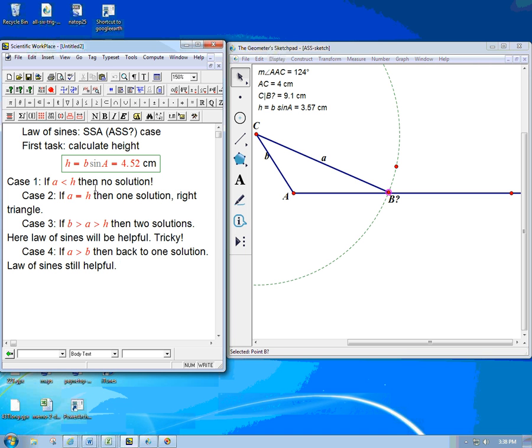So, really, what we're talking about is the first task, if A is acute. The given angle. It doesn't matter what the letter is. That's the interesting case. Calculate the height. Look at all these cases. If A is obtuse, it's a simpler situation. Case one is where A is less than B, and then we're back to having no solution.